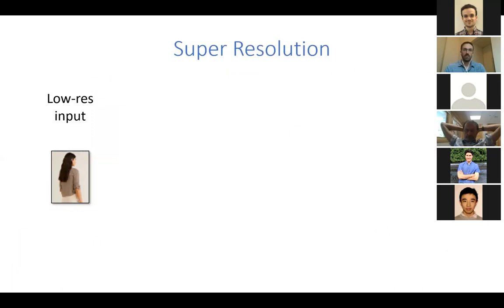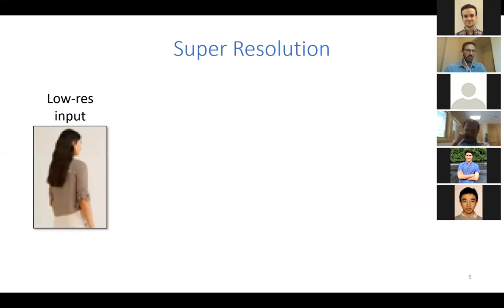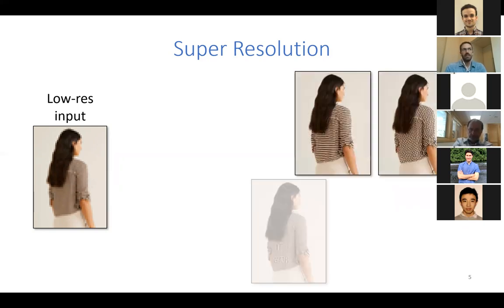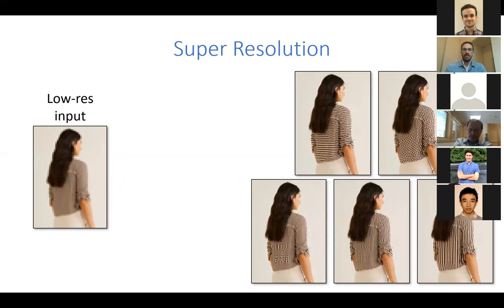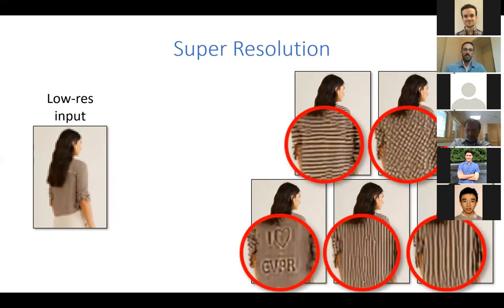This work is about super-resolution, which is the problem where we get a low-resolution image and we want to obtain a super-resolved version of it, but not by repeating the pixels. In the real world, we know there are infinitely many different high-resolution images that could have led to this low-resolution image — meaning each of these images, when downsampled, matches the input. And they can be very different from one another; if we zoom in, the differences can be even very significant semantically.